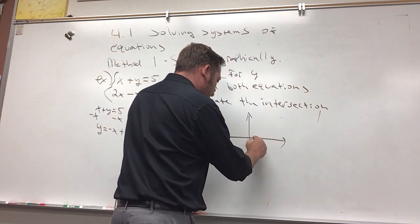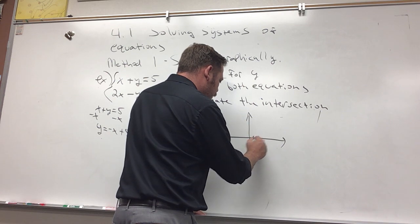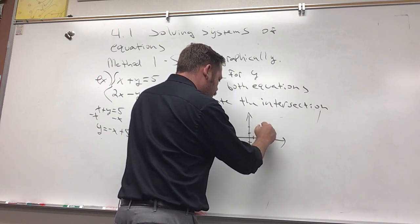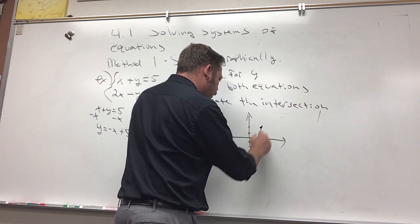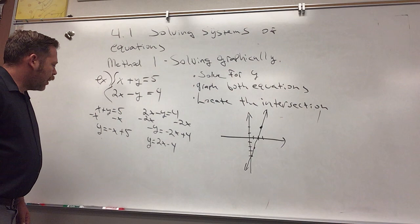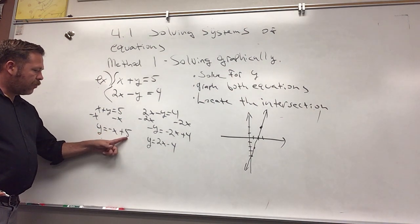Up two, over one. Up two more, over two. Up two more, over three. So there is my line for the first equation. And then this other one has a starting point of 5 and a slope of negative 1, so we'll go up one, two, three, four, five.